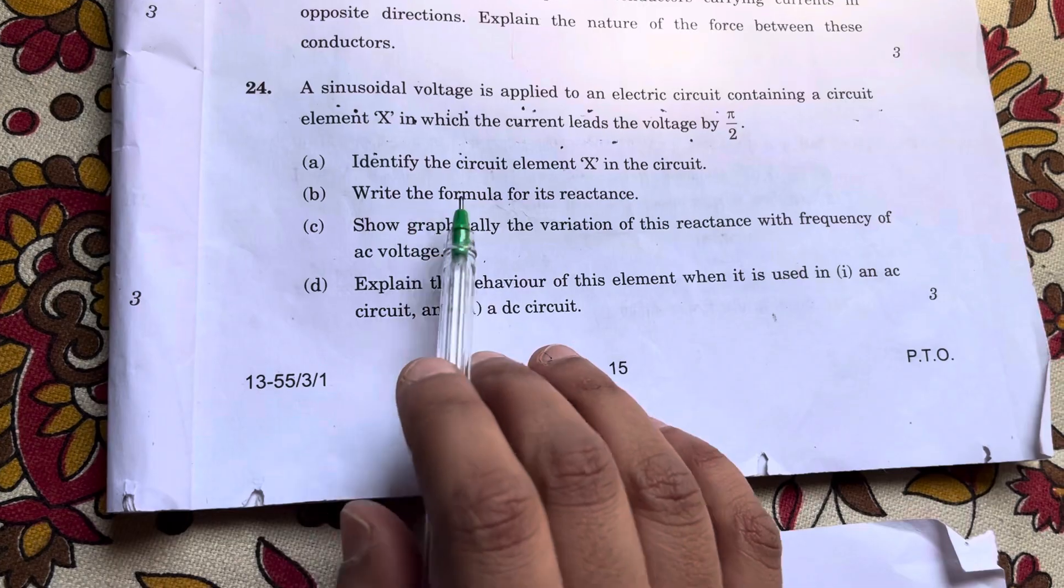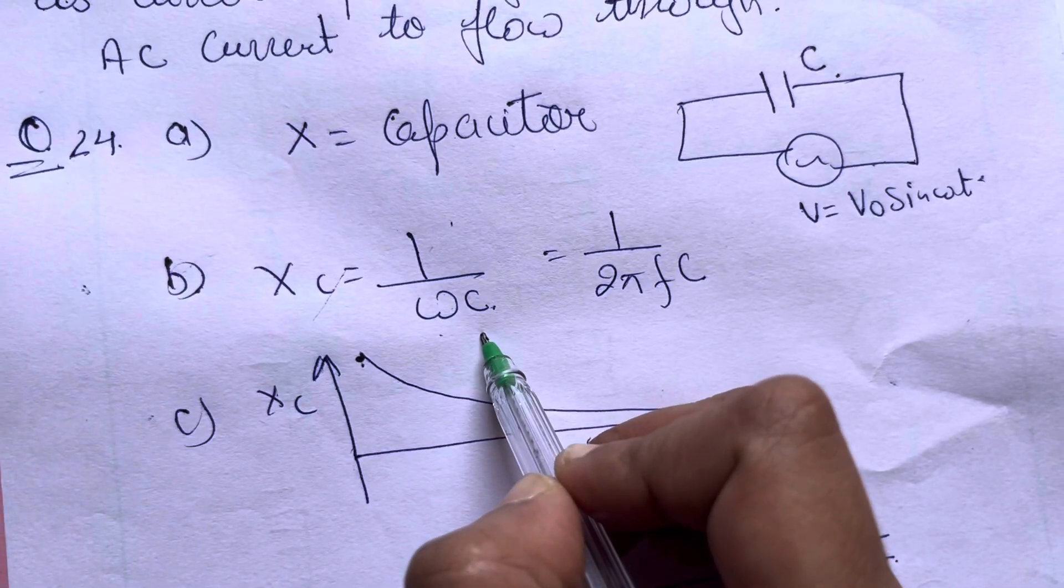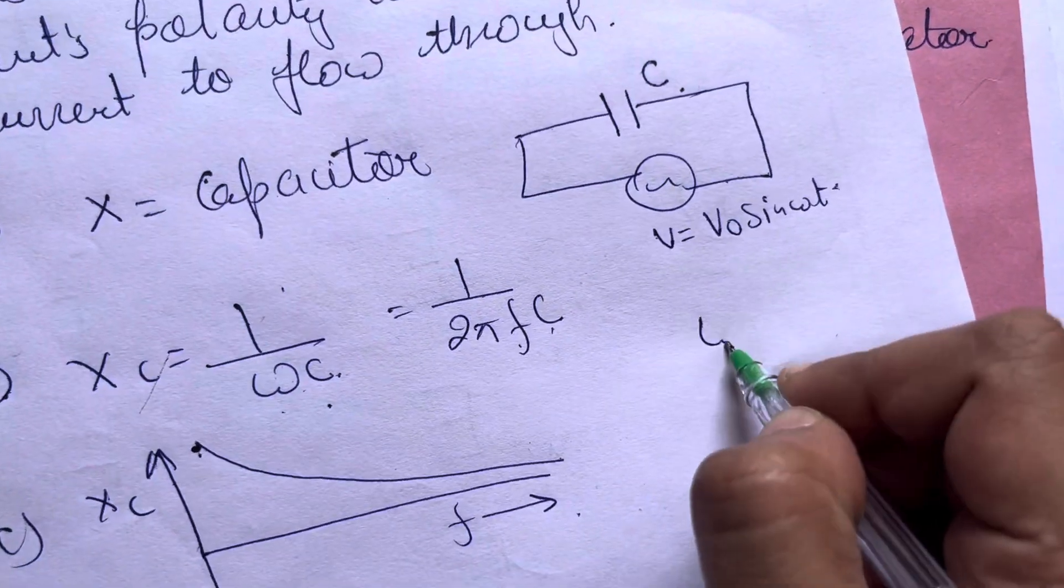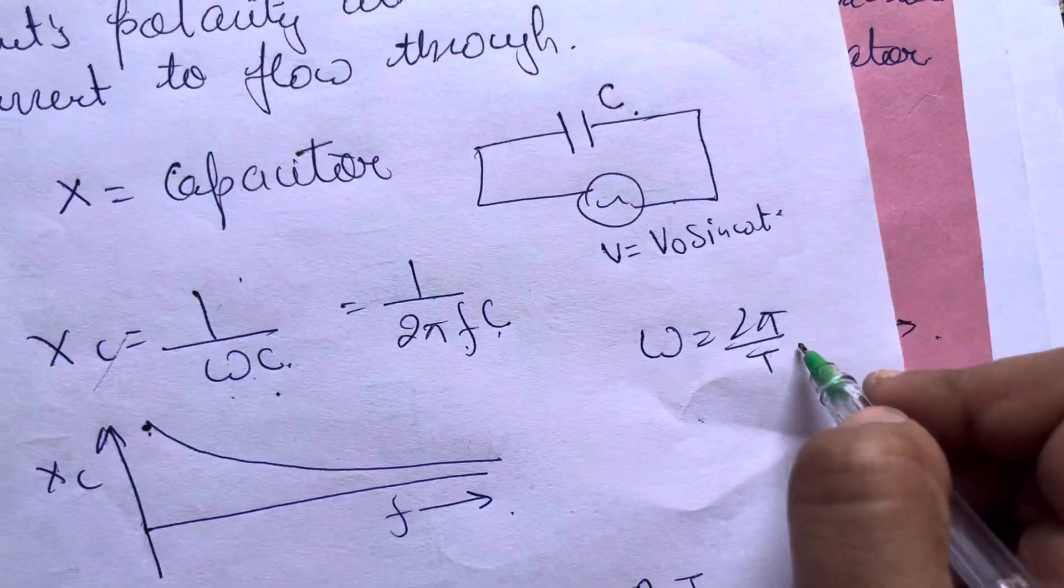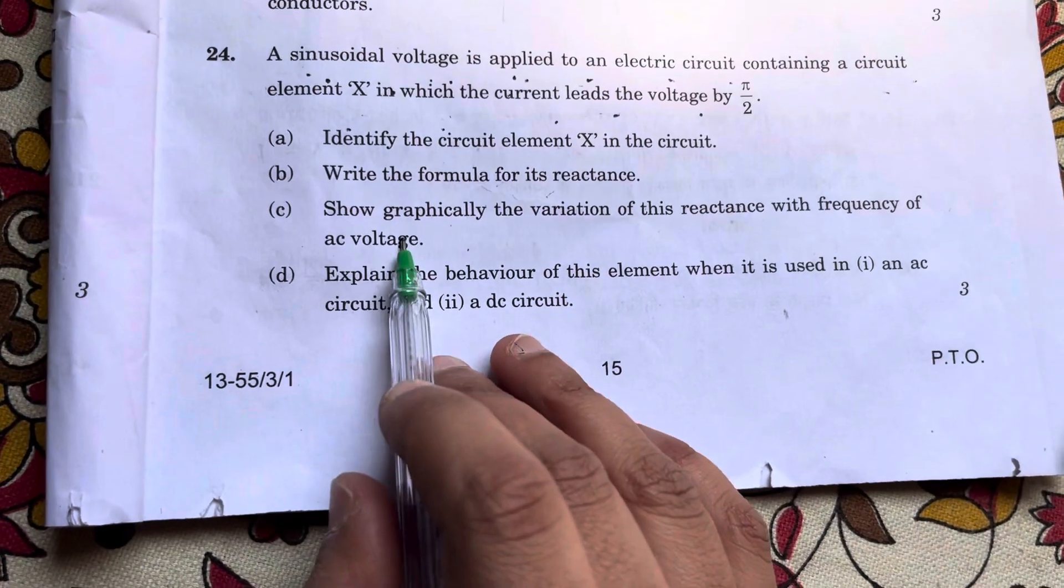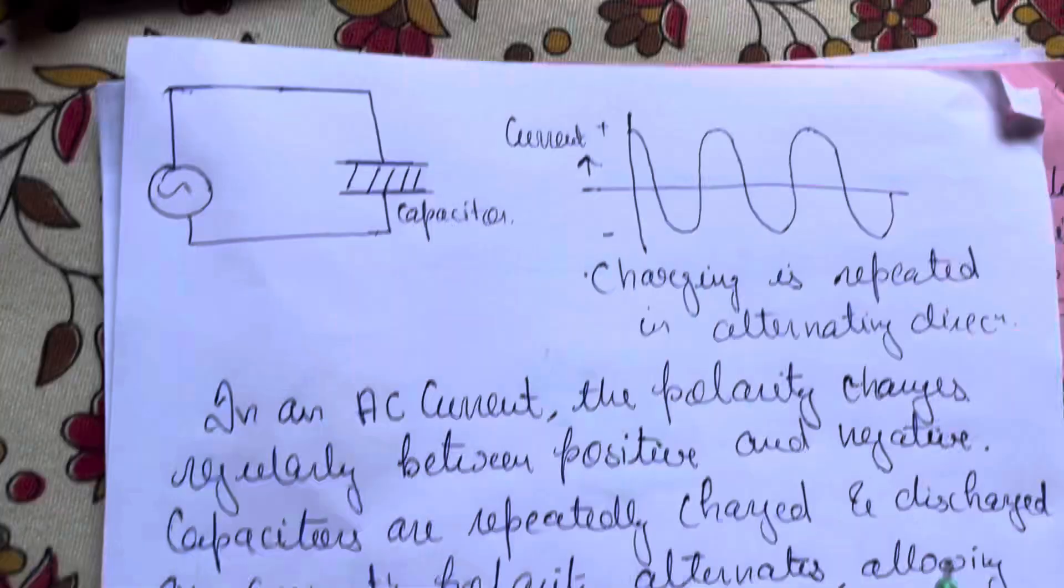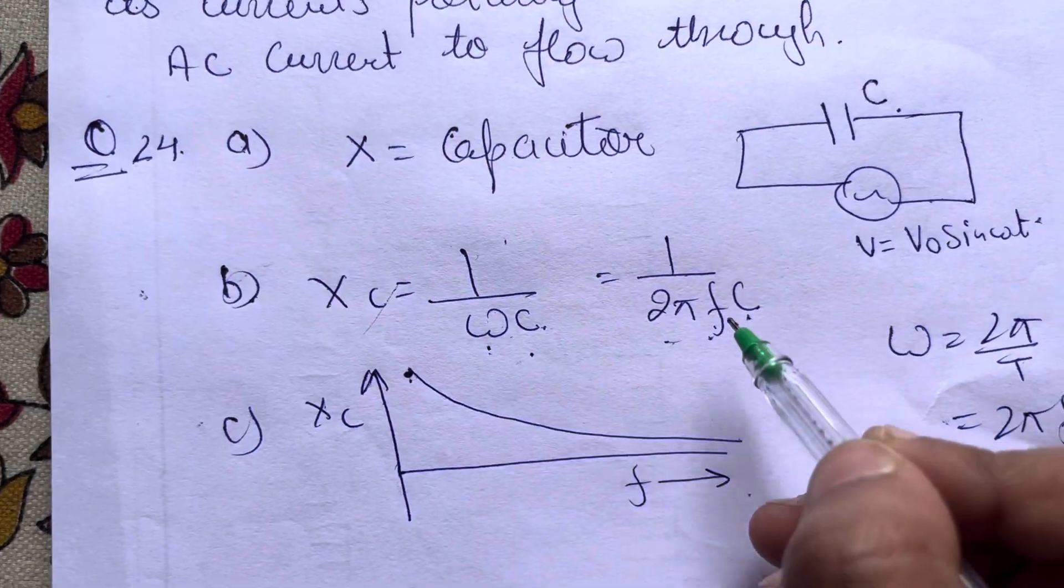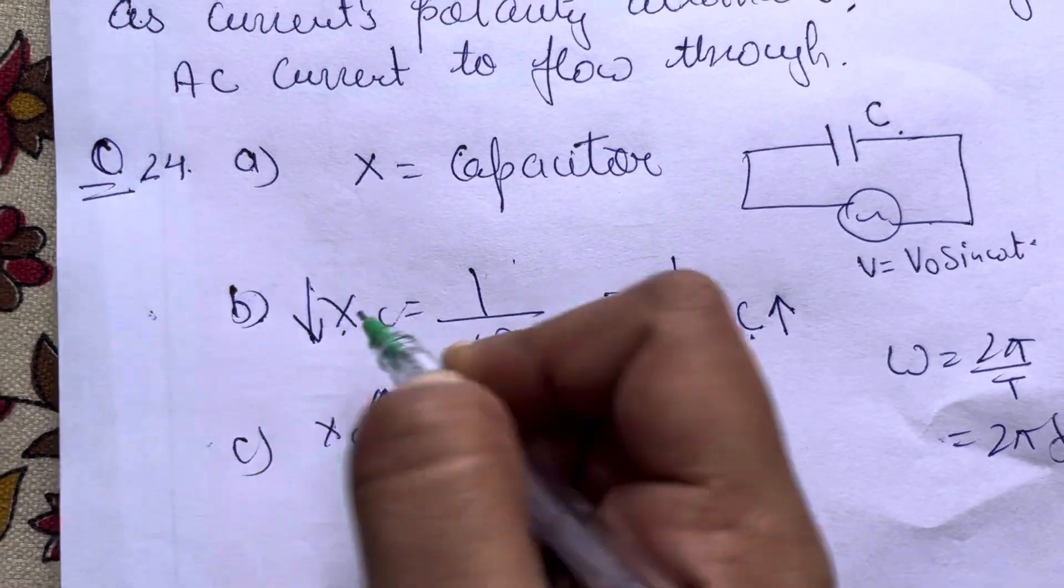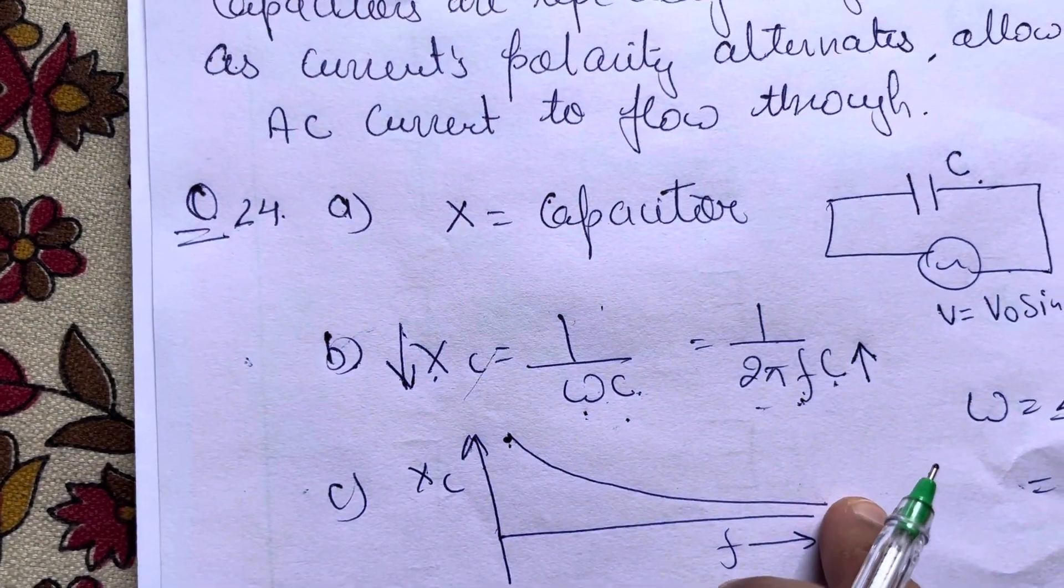Next, write the formula for the reactance. Reactance Xc equals 1 over ωC, where ω equals 2π by T and 1 upon T equals frequency f. So Xc equals 1 over 2πfC. Now show graphically the variation of reactance with the frequency of AC voltage. You can see that if the frequency increases, then the reactance decreases. So this graph will be drawn with frequency on one axis and reactance Xc on the other. As f increases, Xc decreases.